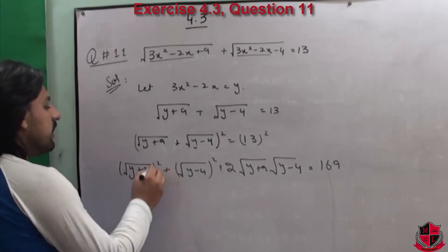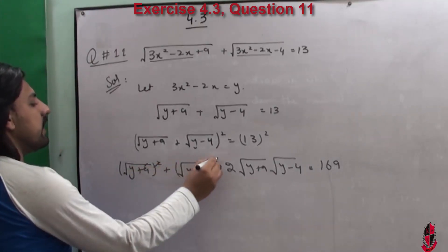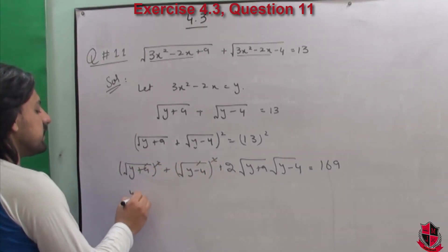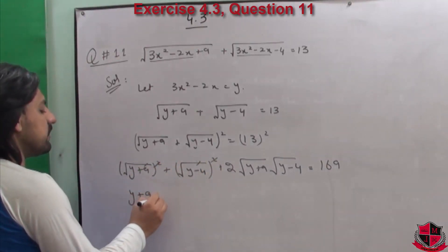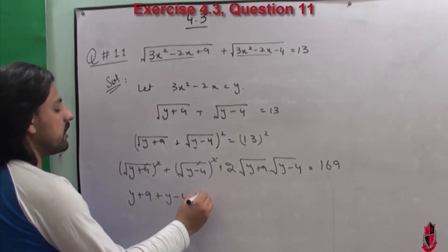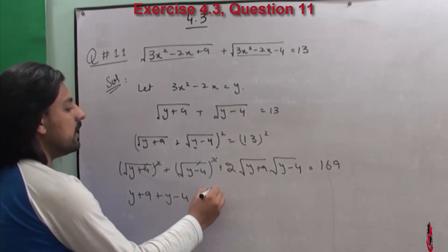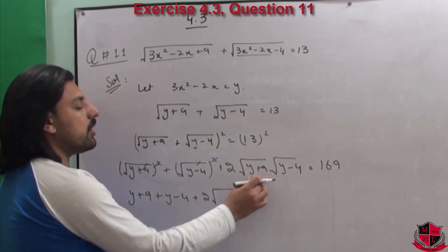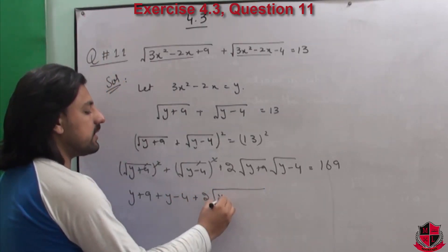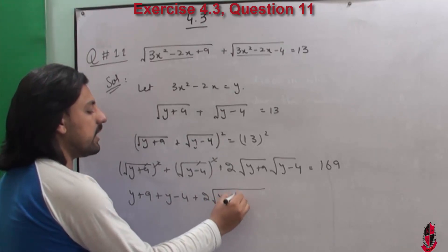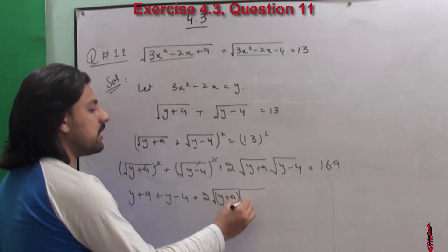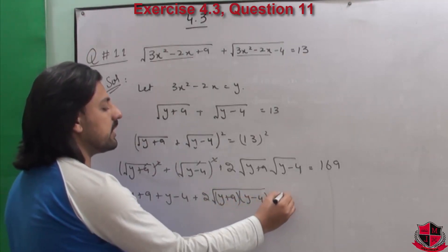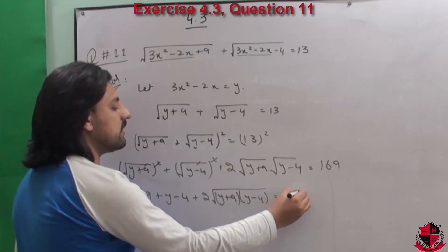13² = 169. यहां पर square और under root से cancel होने पर आपके पास बचेगा: (y+9) + (y-4) + 2×√(y+9)×√(y-4) = 169.